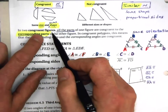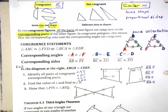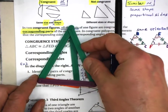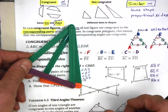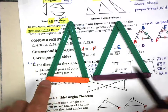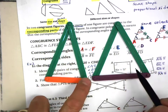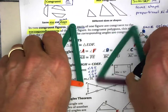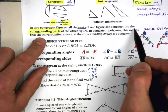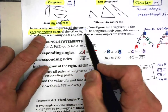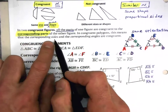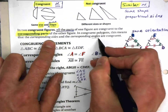In two congruent figures, all of the parts — not just some — must be congruent. You have to have all three pairs of sides congruent and all three corresponding pairs of angles congruent in order for the shapes to be congruent. All parts of one figure must be congruent with the corresponding parts of the other. In congruent polygons, corresponding sides and corresponding angles are all congruent.